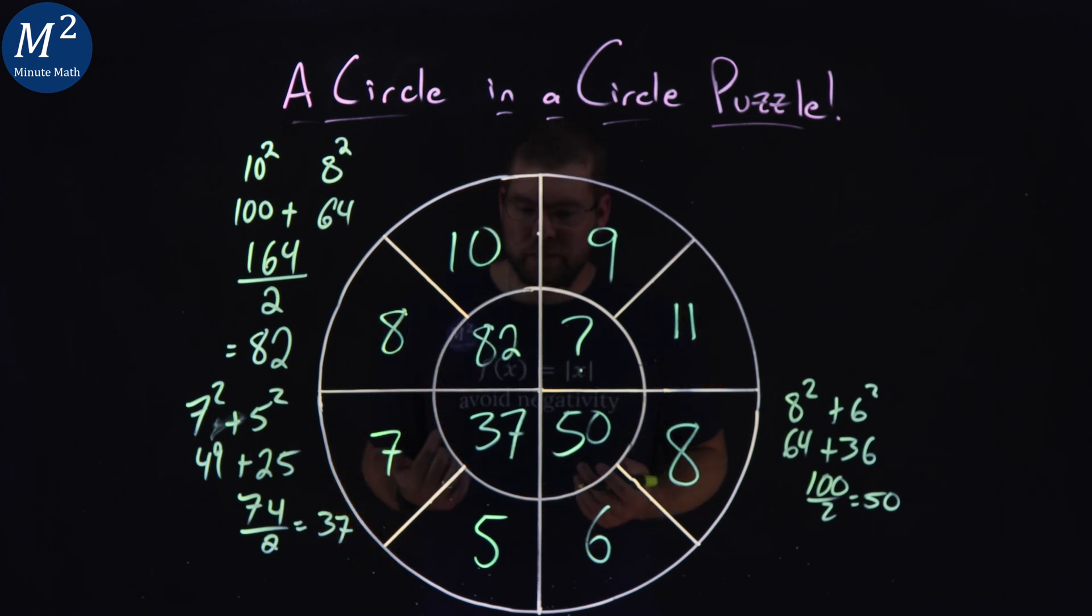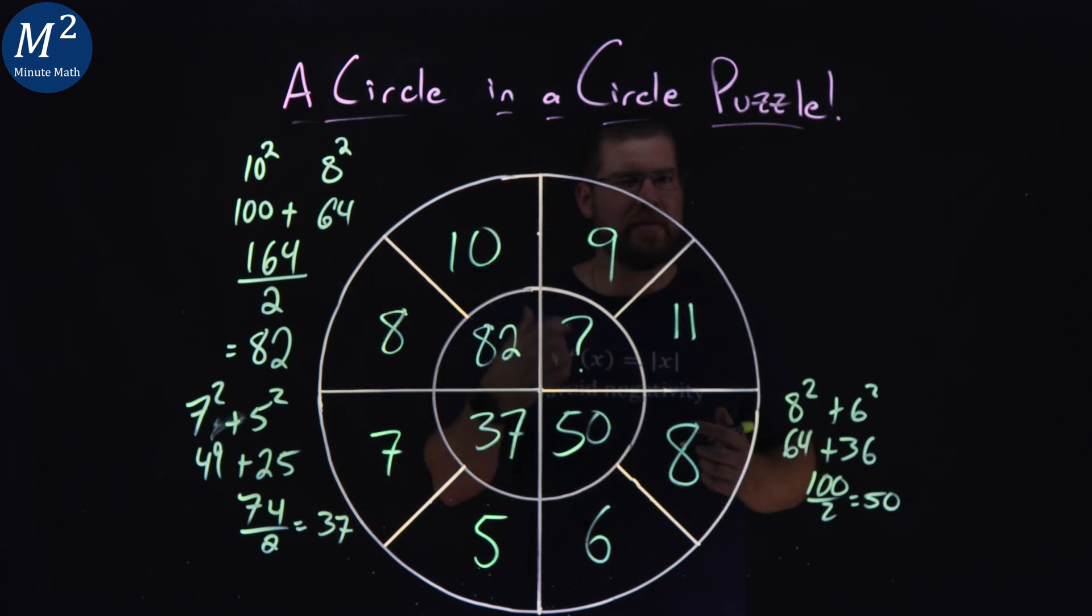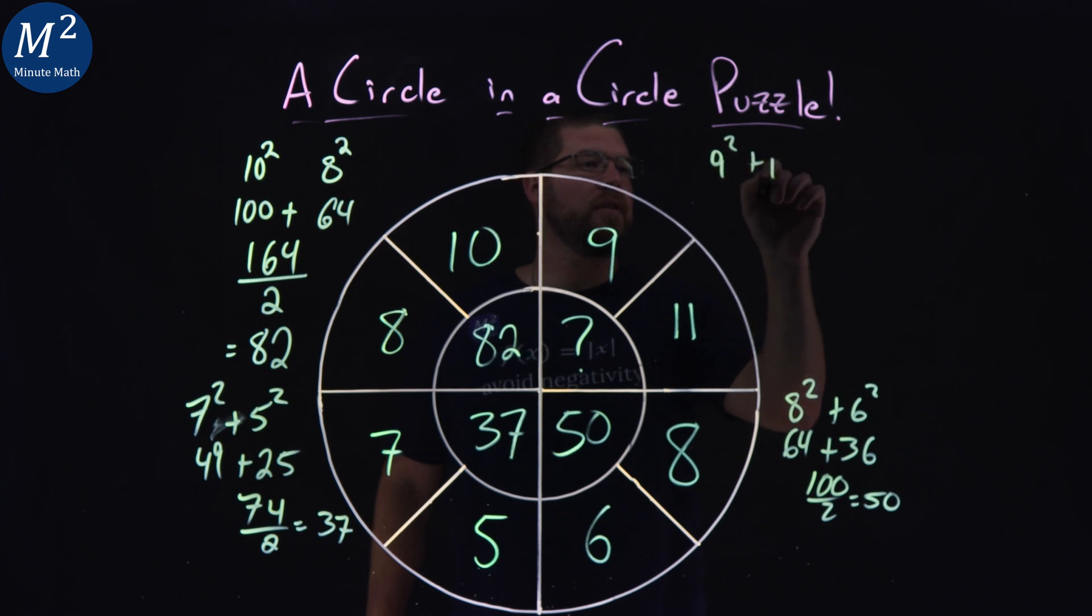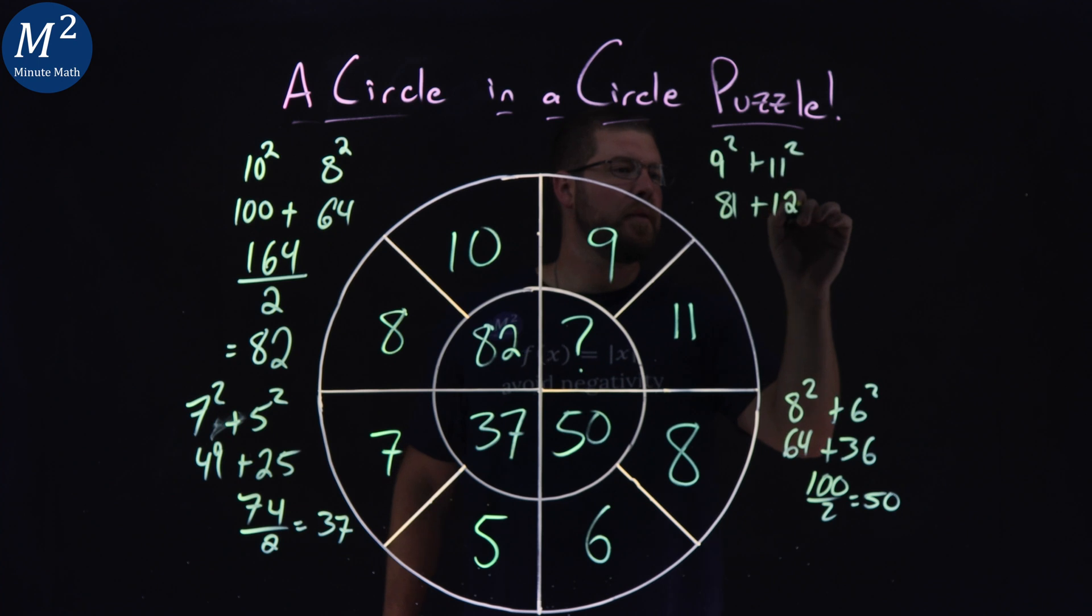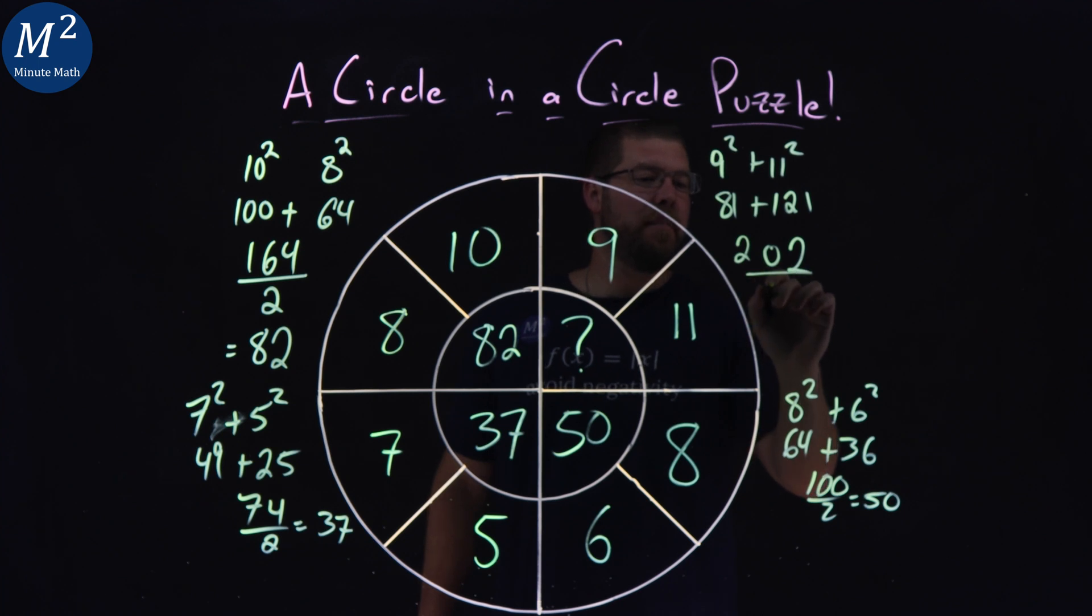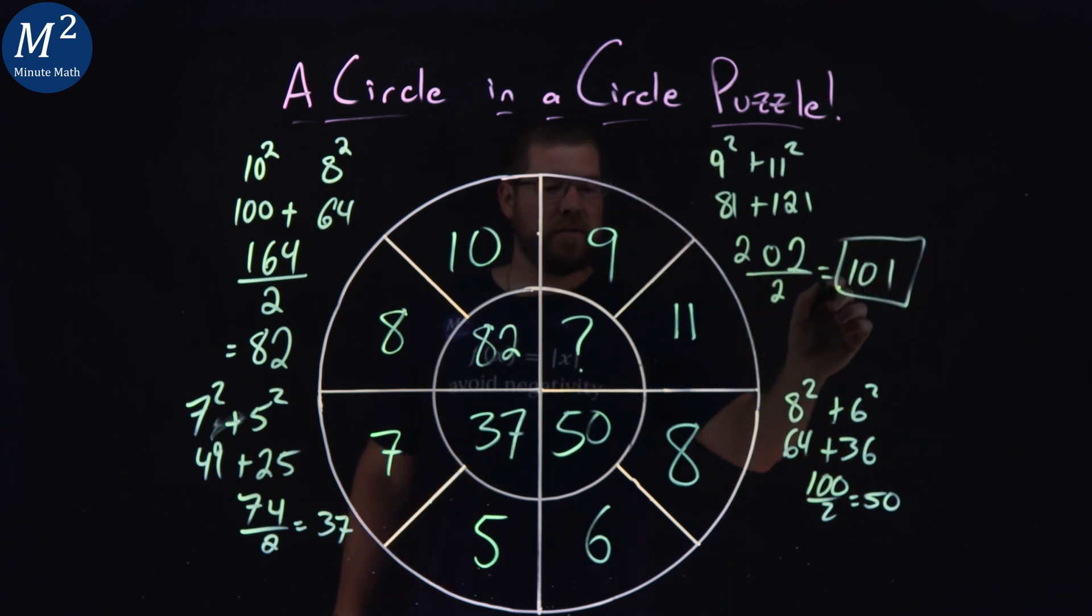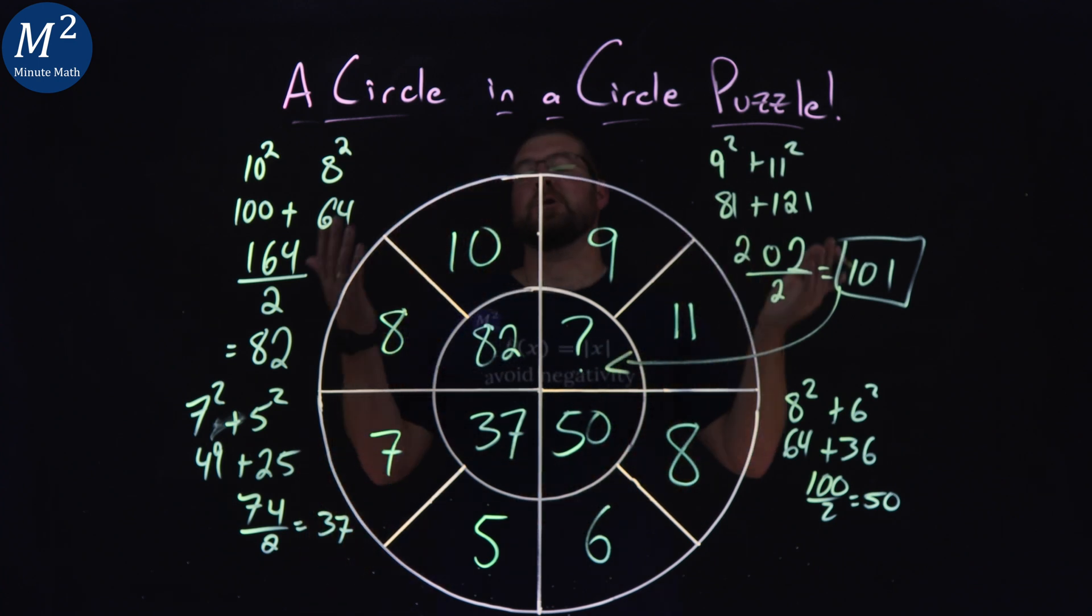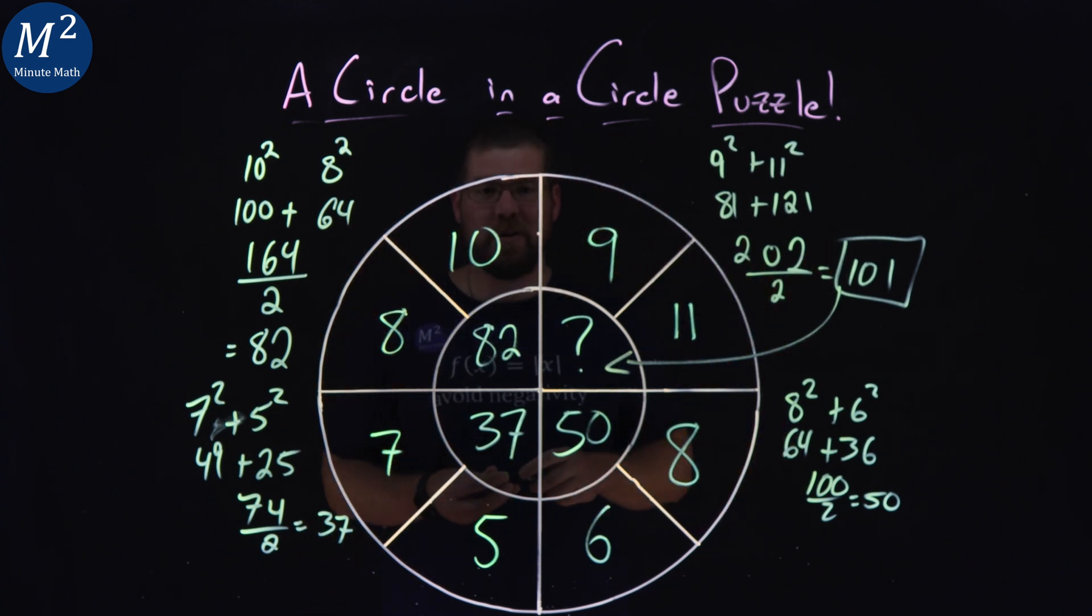So, that pattern's held true the whole time. Let's see the last one here. 9 squared plus 11 squared. We have 9 squared is 81 plus 121. Add them together. We have 2 at the end, 0, 2, 0, 2. Divide that by 2, and we got 101. And so, our missing number here for the circle in a circle puzzle is 101.